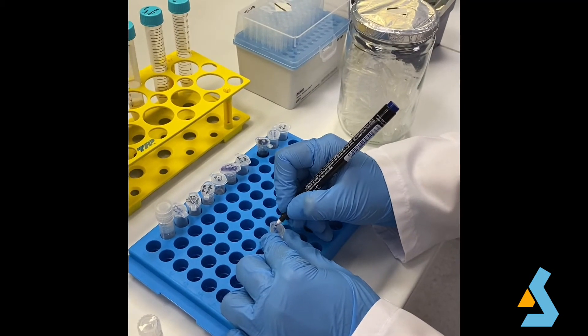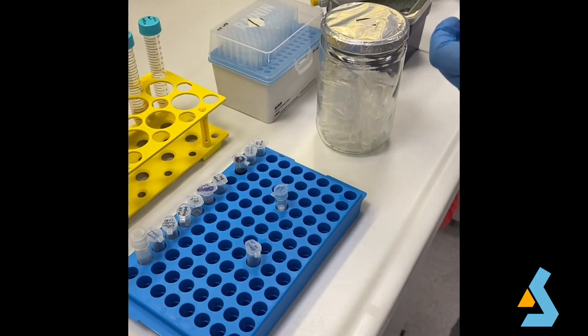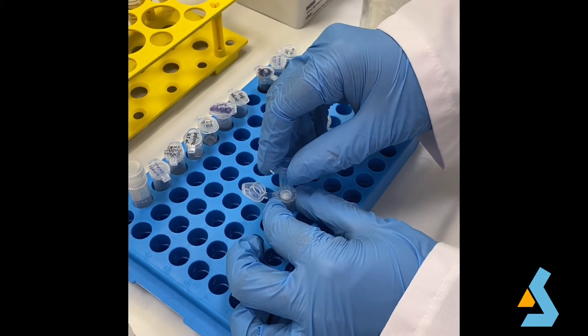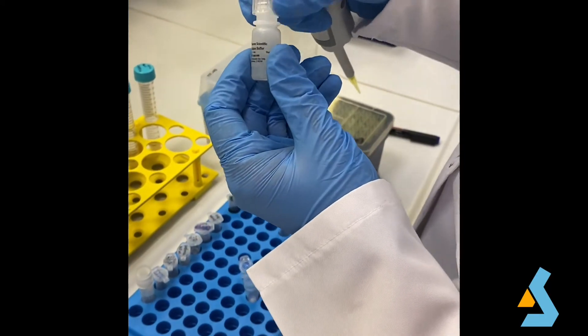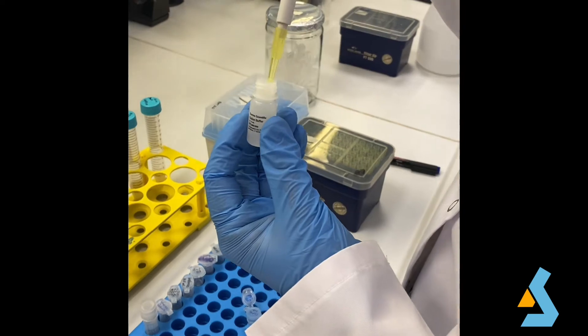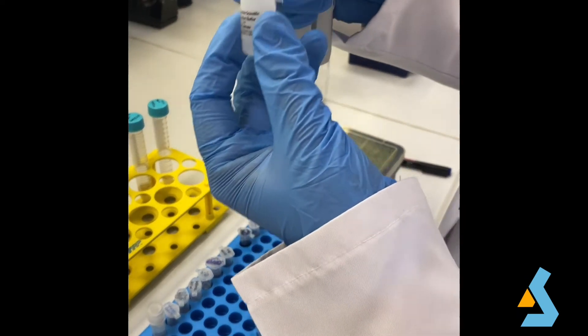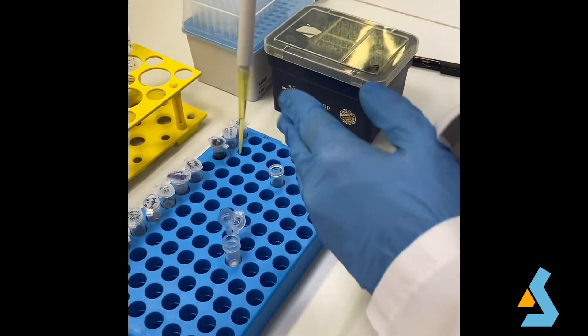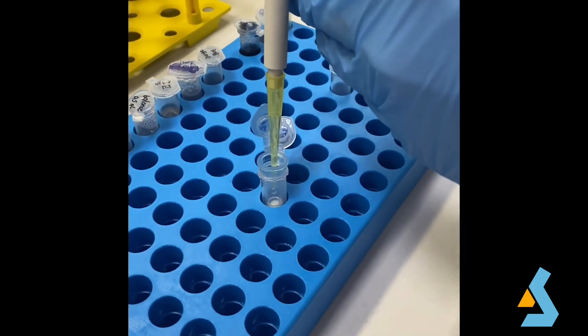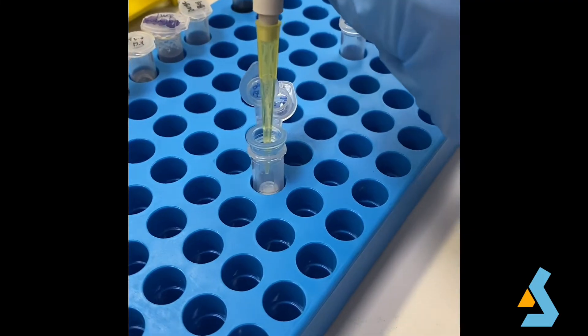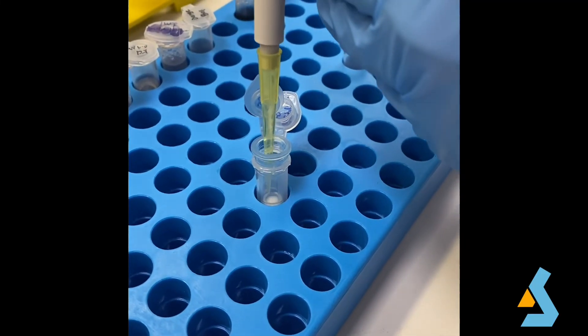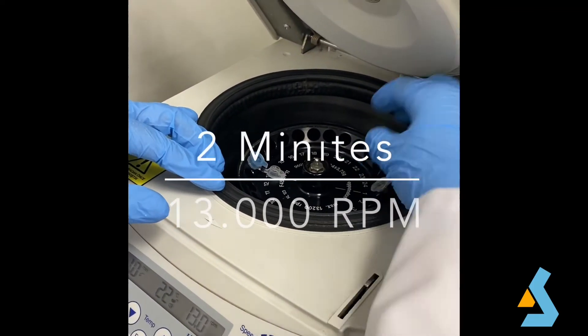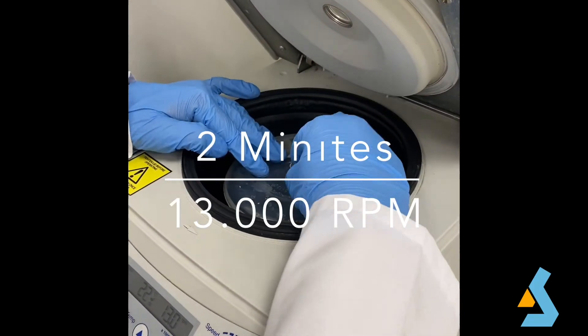Finally, we should label a fresh microcentrifuge tube and transfer the spin column into this new tube. Coming to an end, we need to add 50 microliters of the elution buffer to the center of the spin column in order to elute the plasmid DNA. While adding elution buffer, we should be careful not to touch the membrane with the pipette tip. The tube is then centrifuged for two minutes at 13,000 RPM.